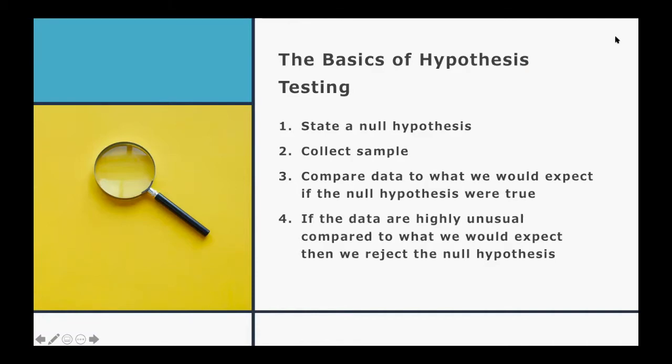What do we do when we test a statistical hypothesis? Well in general we follow four steps. The first is to state a null hypothesis. We then collect our sample and compare the data in the sample to what we would expect to find if the null hypothesis were true. If the data in the sample are highly unusual compared to what we would expect if the null hypothesis is true, then we would reject this null hypothesis as not being consistent with the data. So these are the basic steps, and in today's video we're going to go through each of these steps in a little bit more detail.